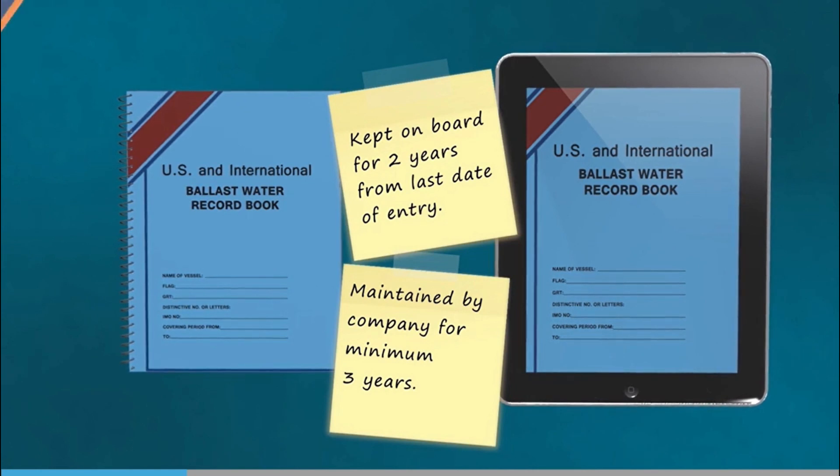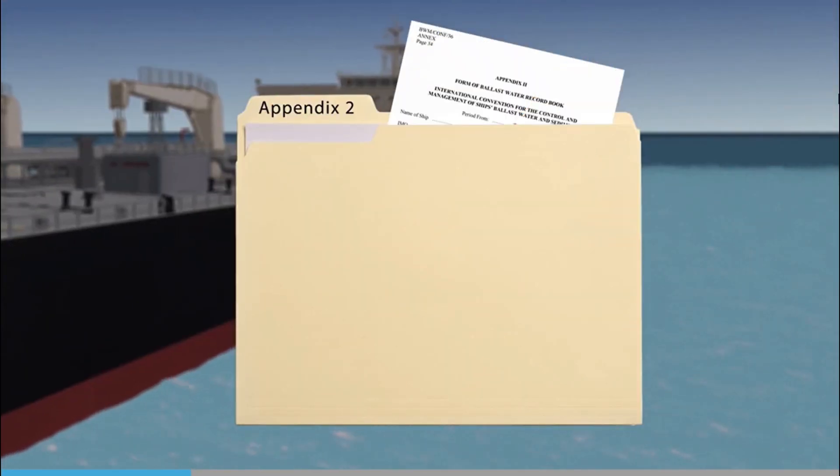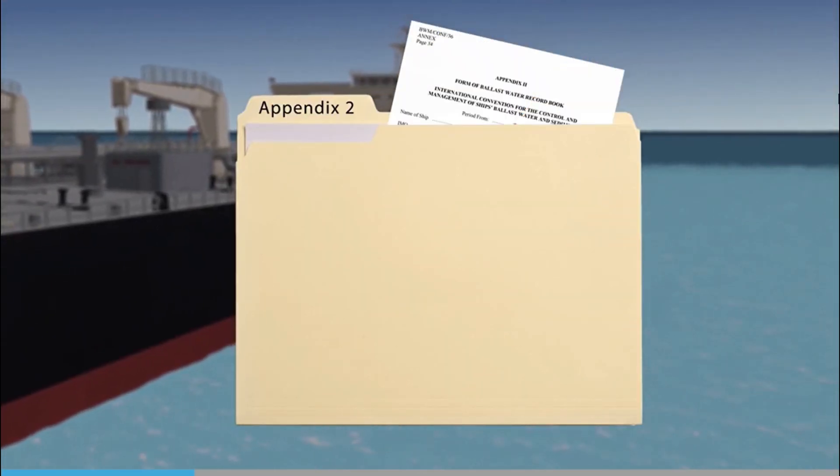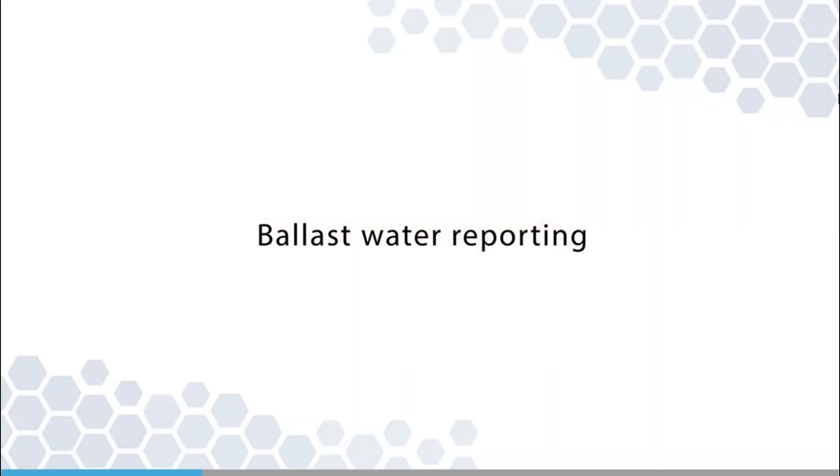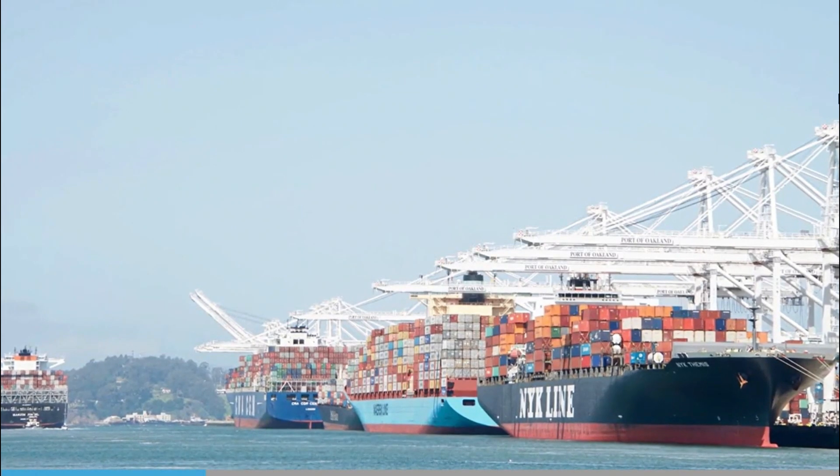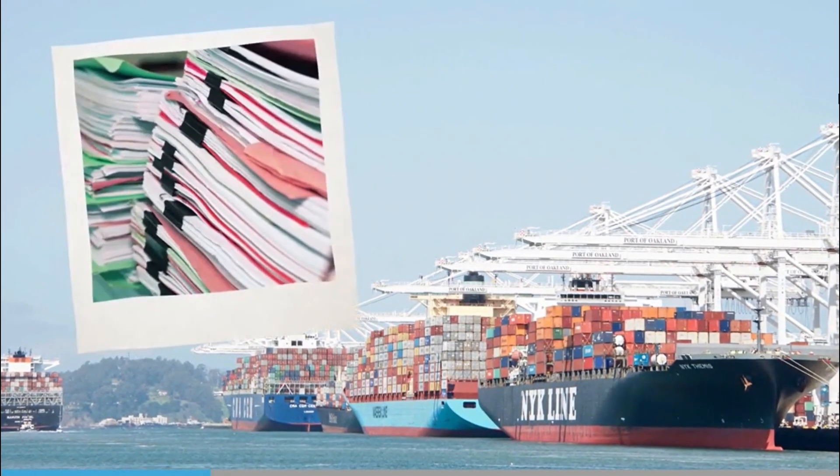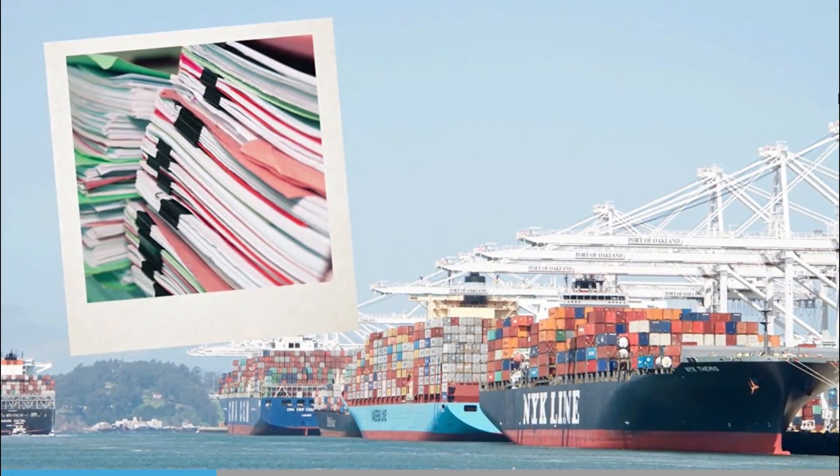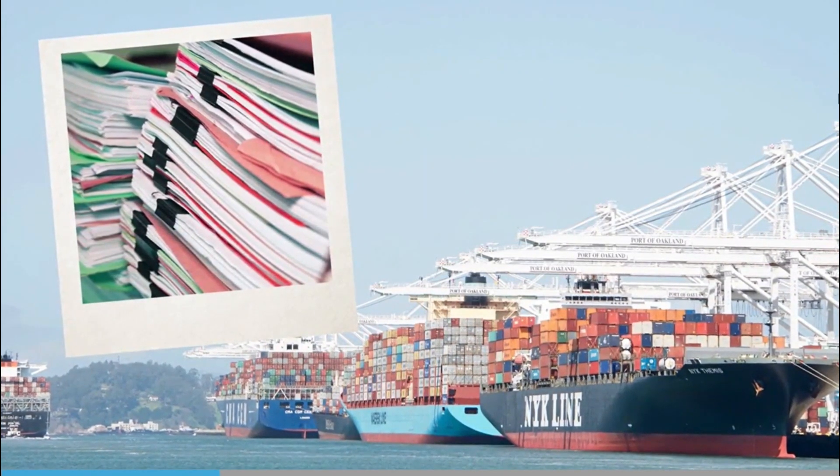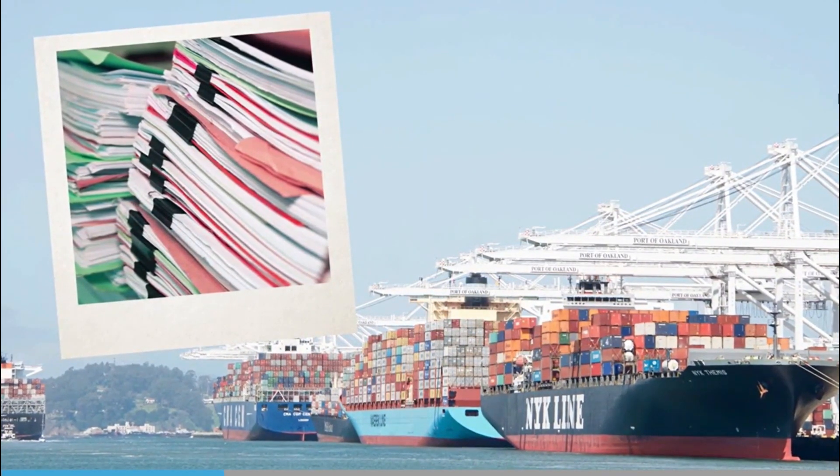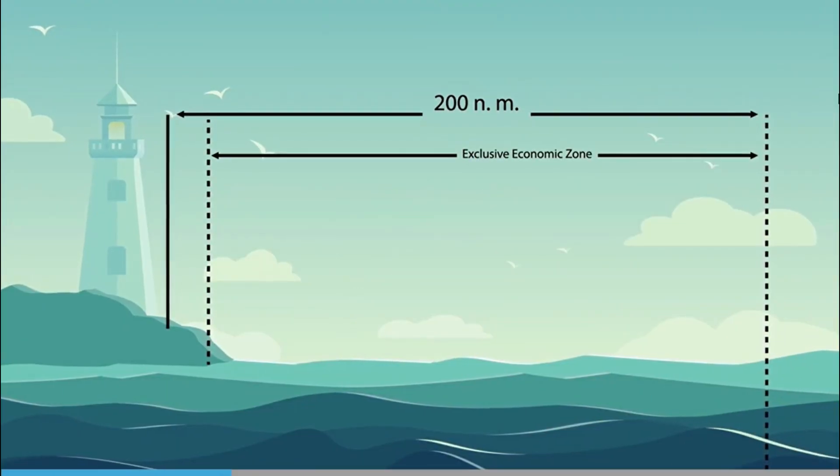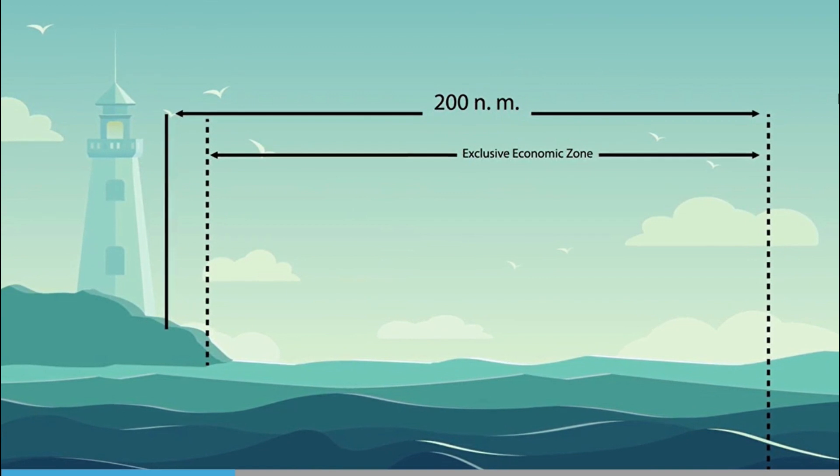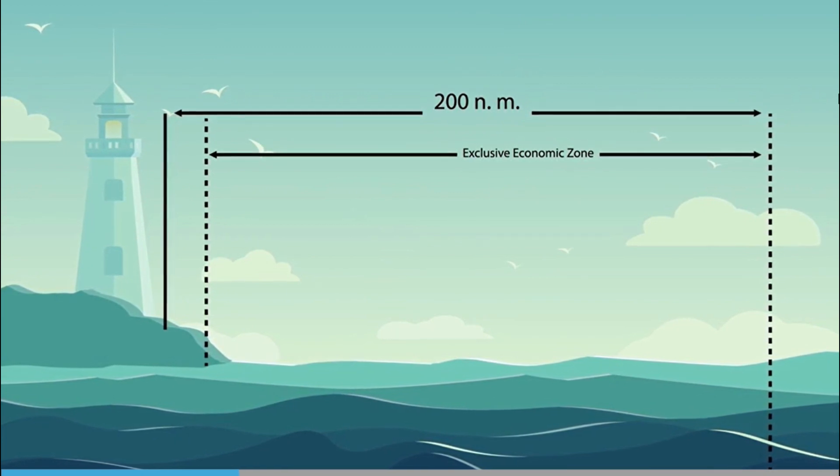There are minimum content requirements which are stated in appendix two to the annex. Most port states require numerous reports to be submitted in advance of an arrival in their territorial waters or even in the exclusive economic zone. These borders are depicted in the nautical chart. This includes reports on ballast water management activities.